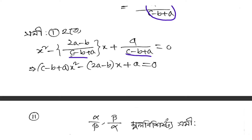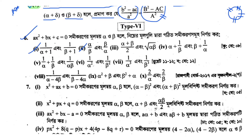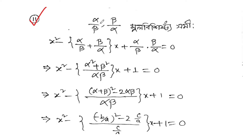Going back — the product: 1 by (alpha plus 1) times 1 by (beta plus 1) equals 1 over (alpha plus 1)(beta plus 1). That denominator is alpha beta plus alpha plus beta plus 1, which equals c by a minus b by a plus 1. So the equation becomes x squared minus (sum)x plus (product) equal to zero, with the product equal to c minus b plus a over a.